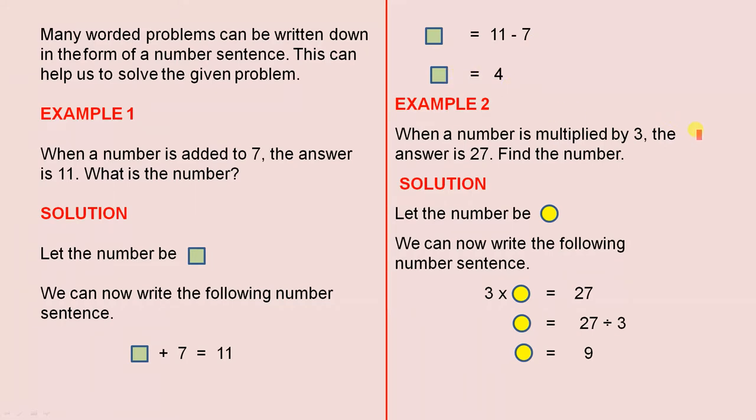Example 2. When a number is multiplied by 3, the answer is 27. Find the number. Let the number be a circle. We can now write the following number sentence: 3 times the circle is 27, so the circle equals 27 divided by 3, so the circle equals 9. Three 9's are 27.